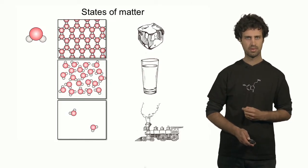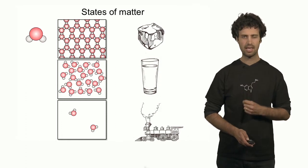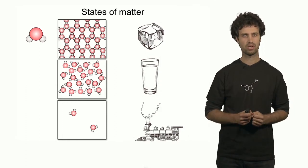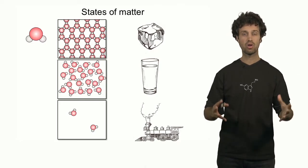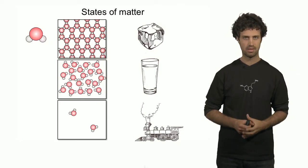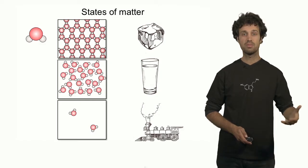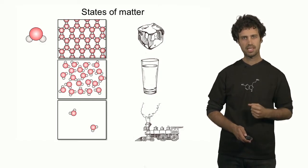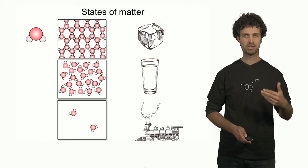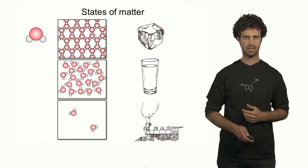Here is another example. This is the gas state. And in the gas state, the very same water molecules are now very far apart. So far apart that they no longer interact. The gas state of water is called steam or water vapor. The three basic states are, therefore, the solid state, the liquid state, and the gas state.